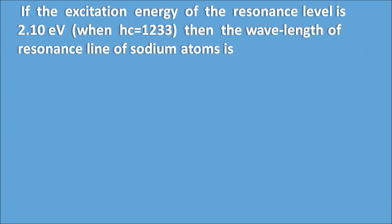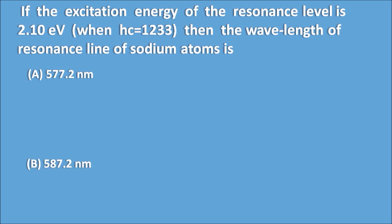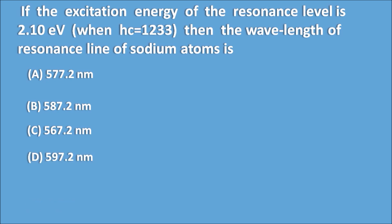Second question: If the excitation energy of the resonance level is 2.10 electron volts, where hc equals 1233, then the wavelength of the resonance line of the sodium atom is — options are A: 577.2 nanometers, B: 587.2 nanometers, C: 567.2 nanometers, and D: 597.2 nanometers.